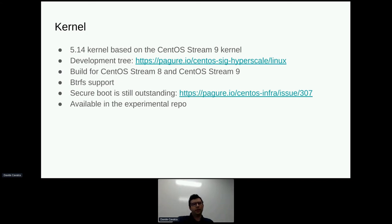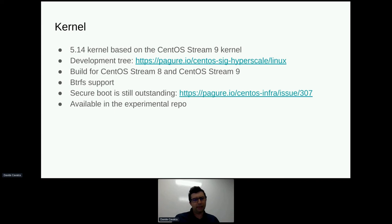Now onto the kernel. As I mentioned, we also have our own kernel now. Specifically, we have a 5.14 kernel based on the CentOS Stream 9 kernel that is made available for both Stream 8 and Stream 9. Similar to systemd, we have our own tree that we use to stage patches. We build the same kernel for both Stream 8 and Stream 9. This kernel has Btrfs enabled, so you can use Btrfs file systems with it, and we try to keep the Btrfs stack in it somewhat up to date. Ideally, we would like to do as much of this work as possible within the CentOS Stream 9 kernel itself — we don't want to maintain patches specific to Hyperscale in the long term, and this is something we're actively working on with our kernel team.